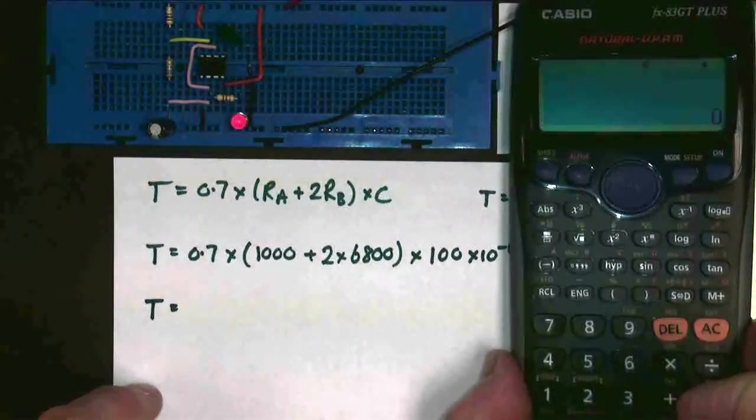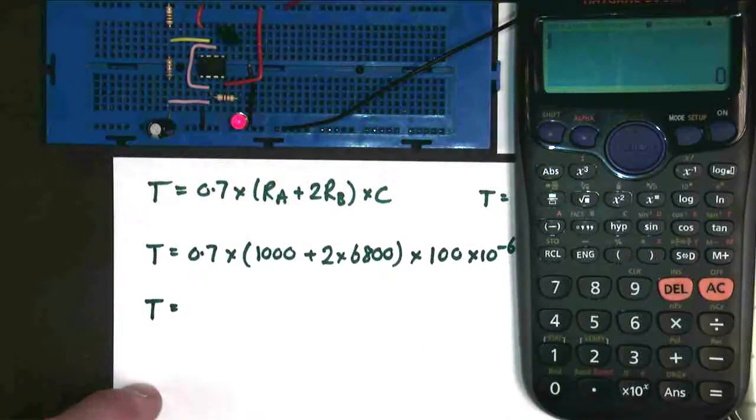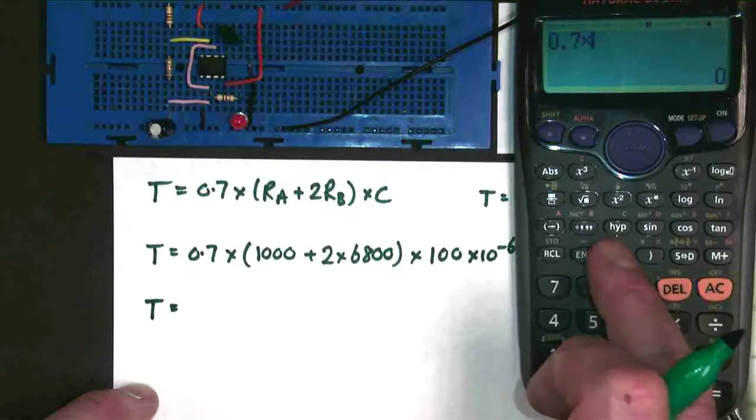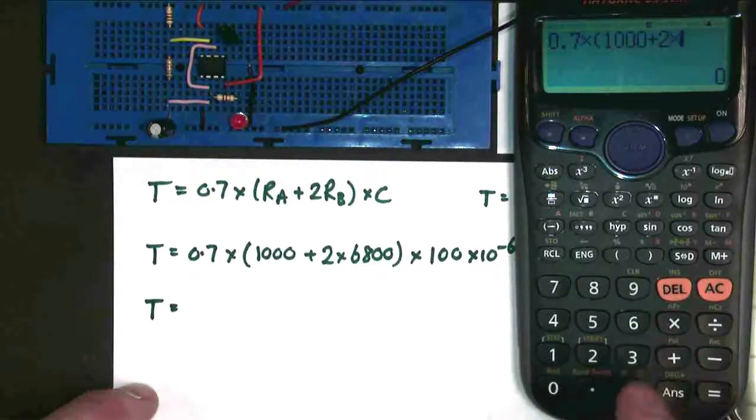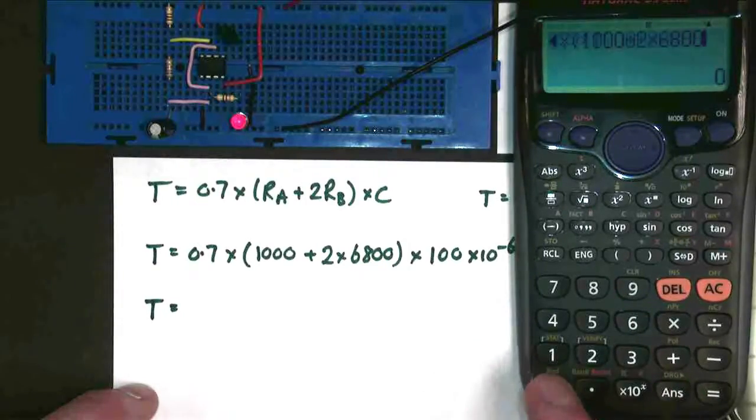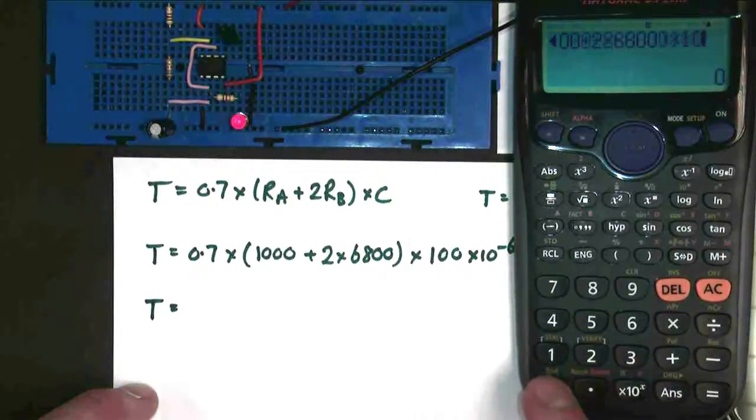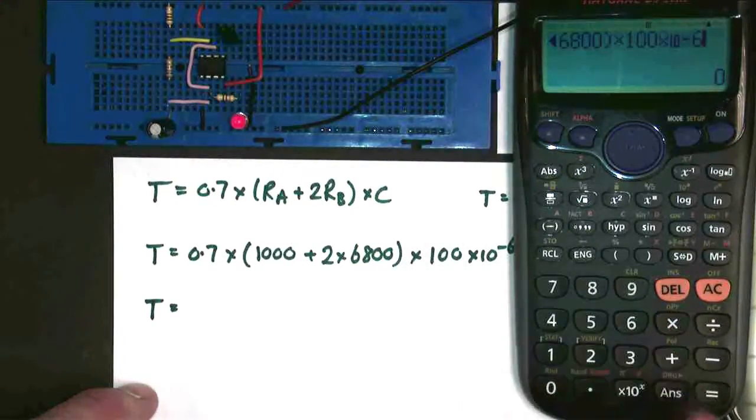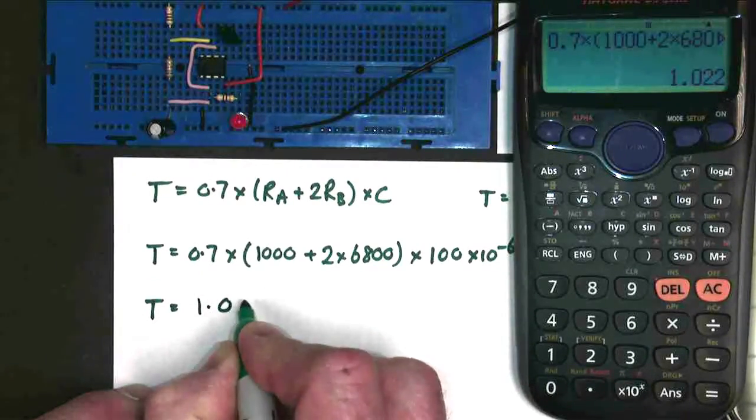So here's my calculator. I'll just put it in place there. So I'm going to do 0.7 multiplied by, open bracket, 1,000 plus 2 times 6,800, close brackets, times by 100 times 10 to the minus 6 equals 1.02 seconds.